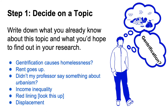Step 1: Decide on a topic. Choose something that you're interested in. And remember, a topic isn't a question — it's usually still too broad. Writing down everything you know about a topic will help you begin to think through some of the more specific facets that you might include in your question.